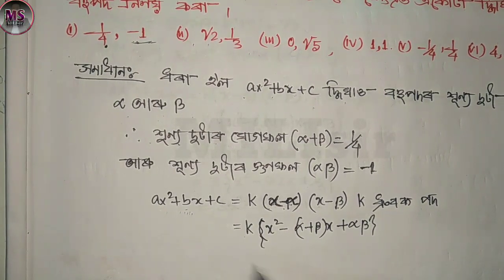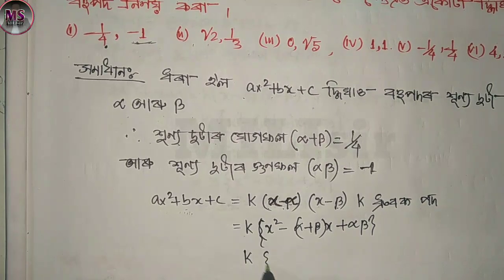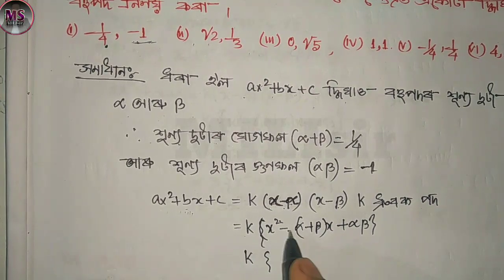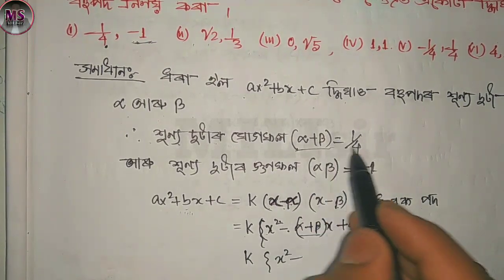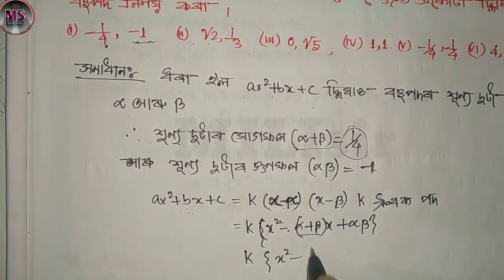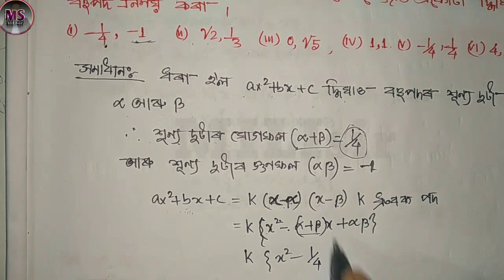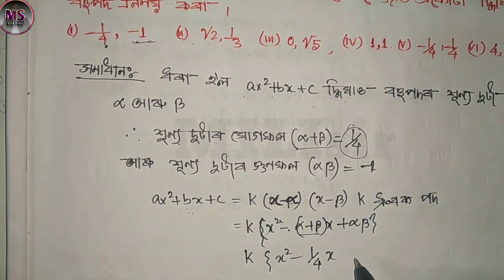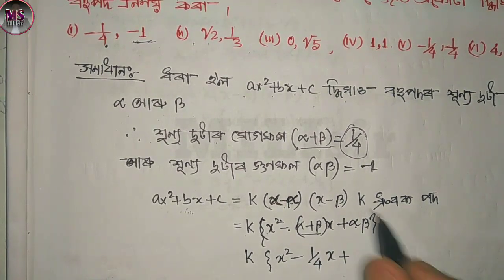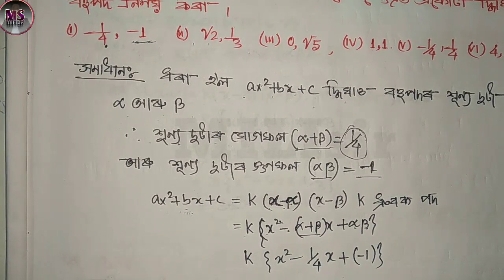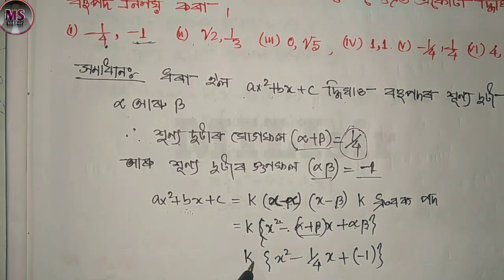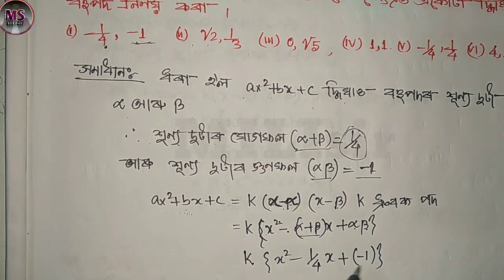So we get: x squared minus alpha plus beta times x plus alpha into beta. Alpha plus beta equals 1 by 4, and alpha into beta equals minus 1. So I write minus 1. We expand and verify these values.